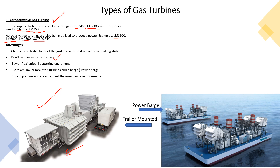Aero-derivative turbines are also used in trailer-mounted and power barge configurations. This is a floating type. These are used to meet power requirements at a state or port, providing grid-connected and synchronized power. Within a few weeks, a trailer-mounted or power barge unit can be deployed.